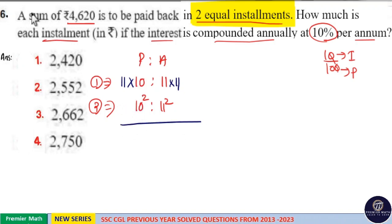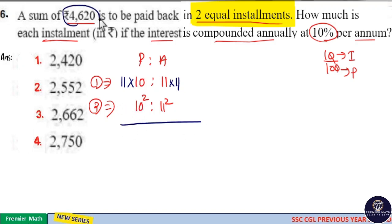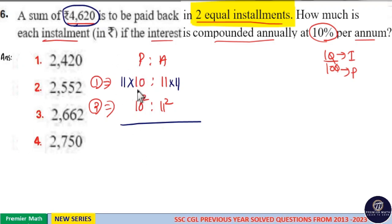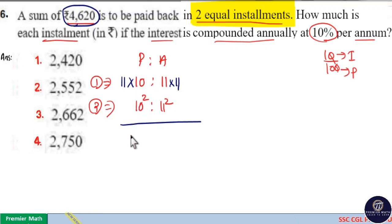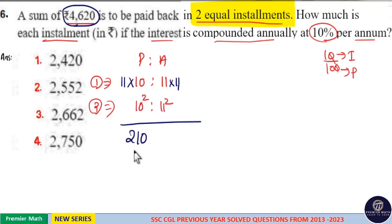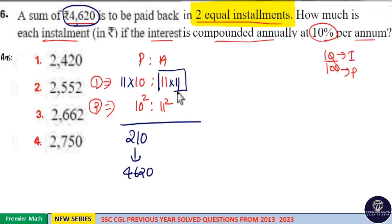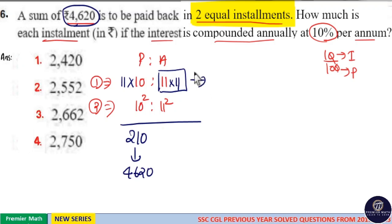We have 4,620 as the sum. Sum means principle. 11 into 10 is 110. 110 plus 100 is equal to 210. Which means 210 parts is equal to 4,620. Now we have to find out what the equal installment is. Equal installment means 121 parts.